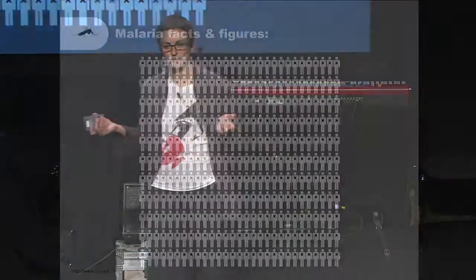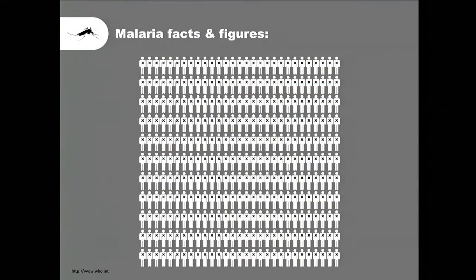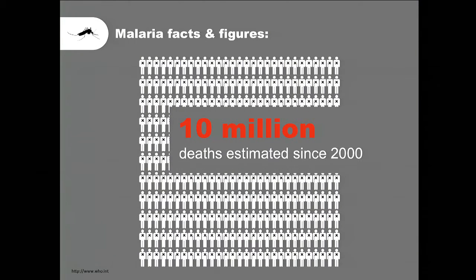The disease I study is called malaria. What you might not know is that malaria has killed 10 million people in the last 12 years, since the beginning of this century. So 10 million people — that's a lot of people. It's like the population of New York City being wiped out in just a short time. But these people are not dying in New York City, they're not dying in Los Angeles or London, but they're dying in Africa.